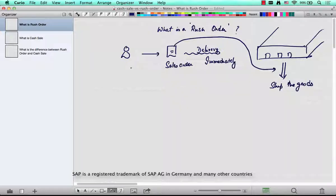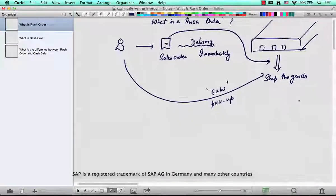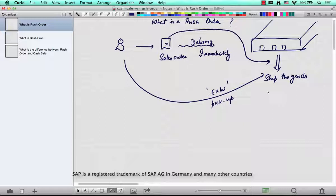Or the customer will come and pick up the goods based on the Incoterms EXW (Ex Works). As soon as the goods are shipped, the customer will be invoiced. So how is this done in SAP?